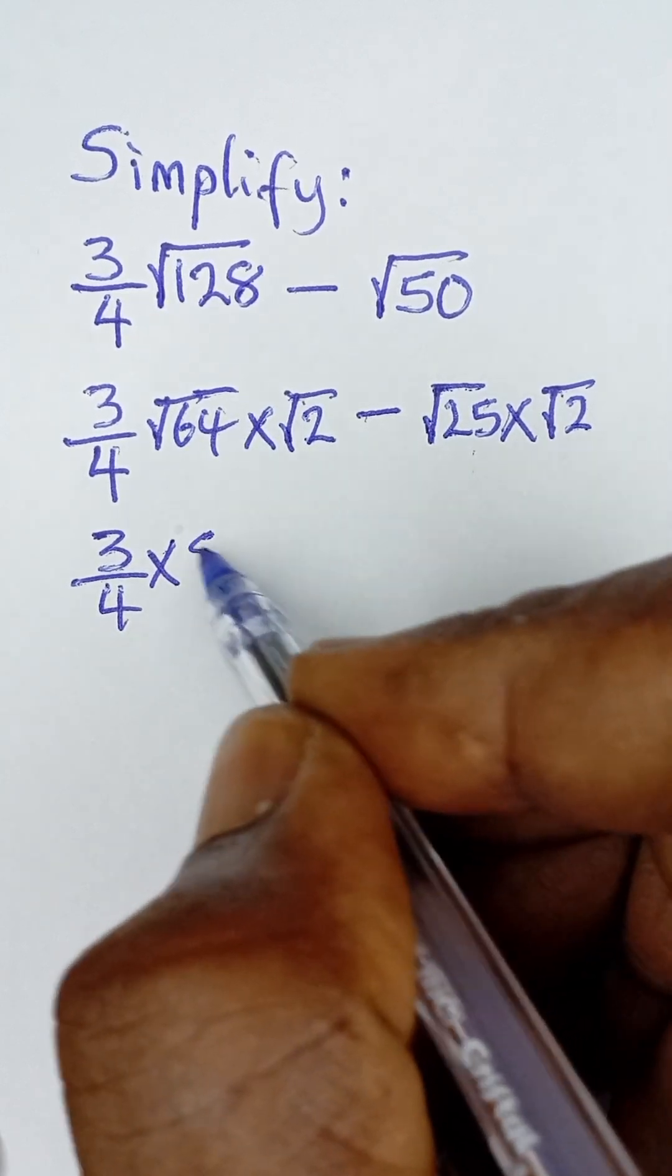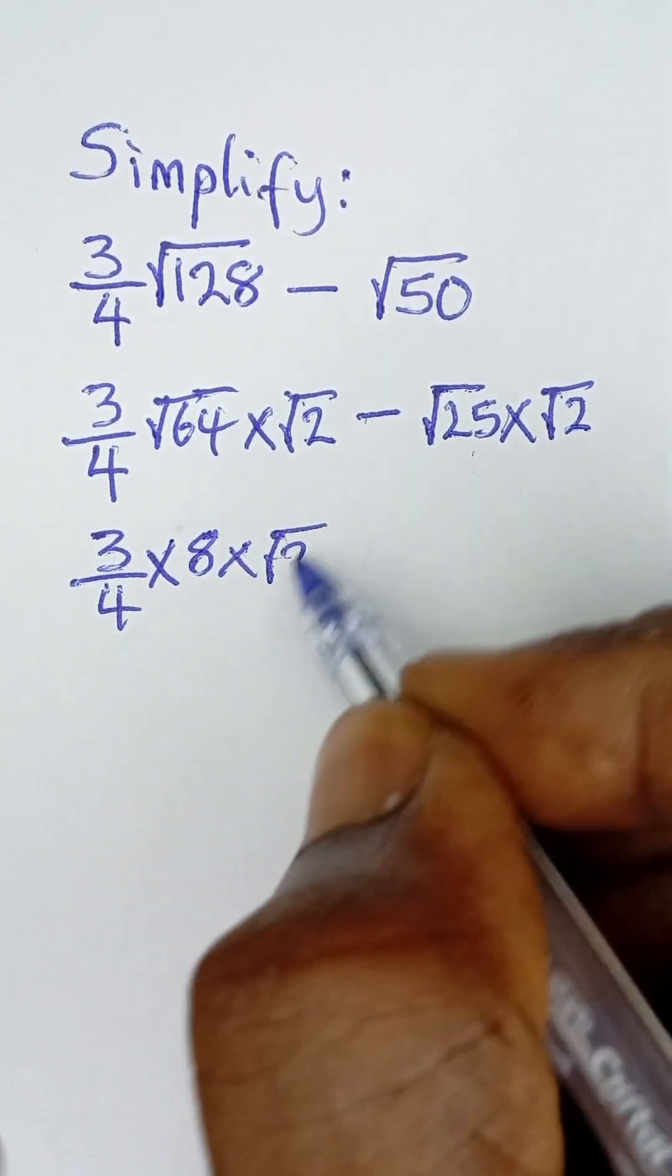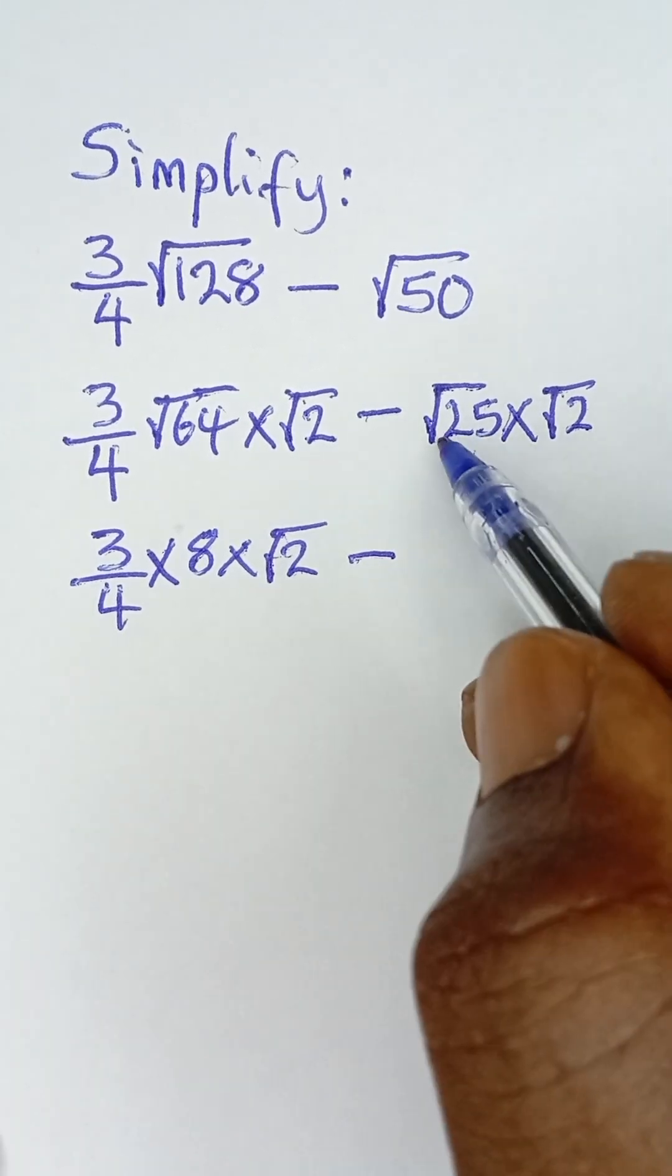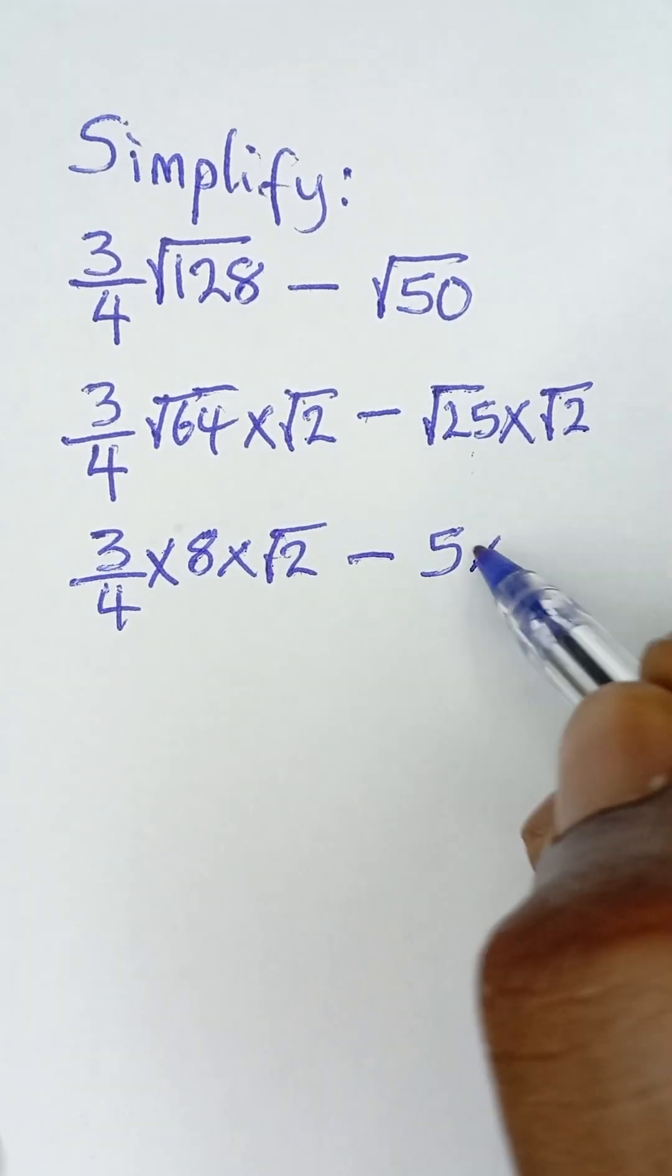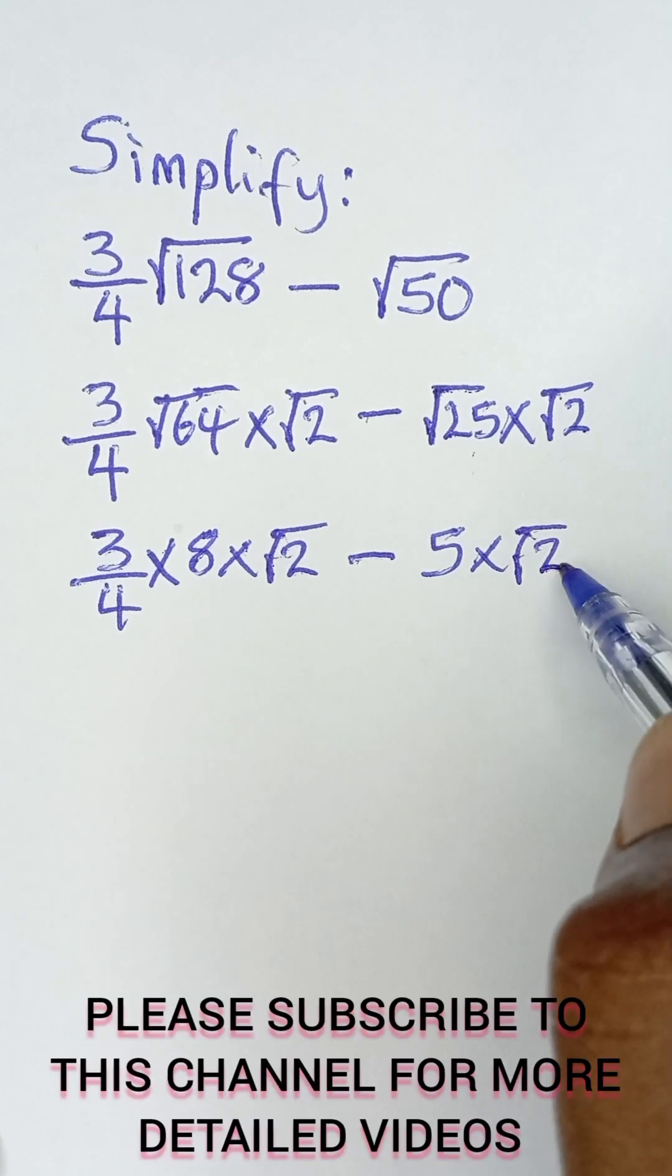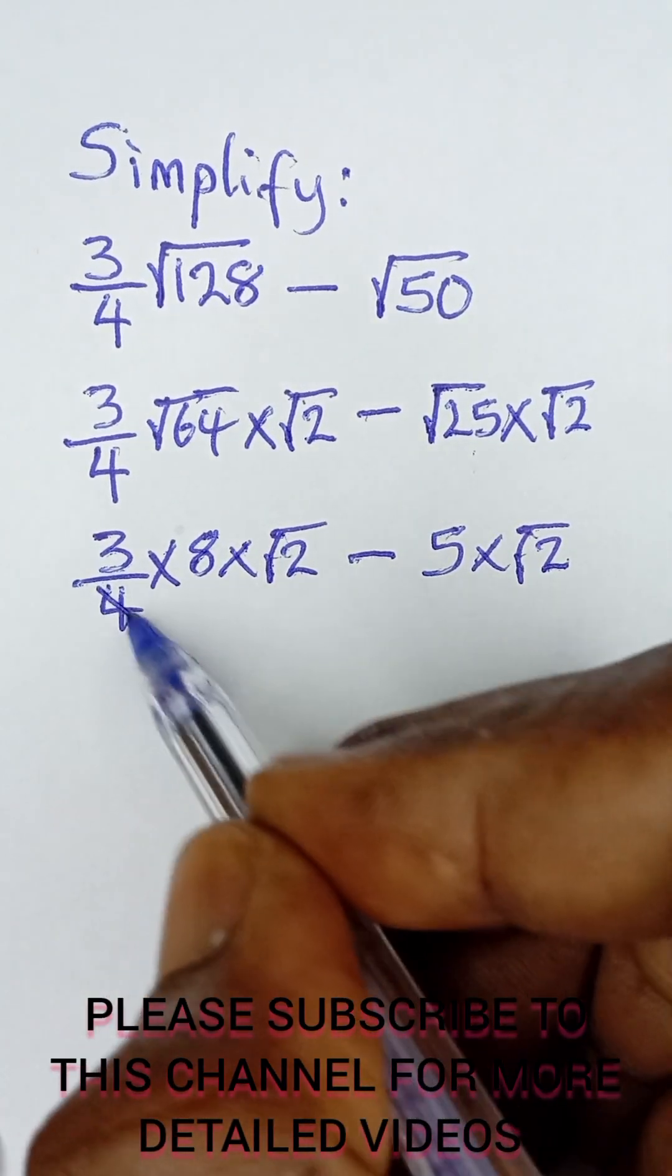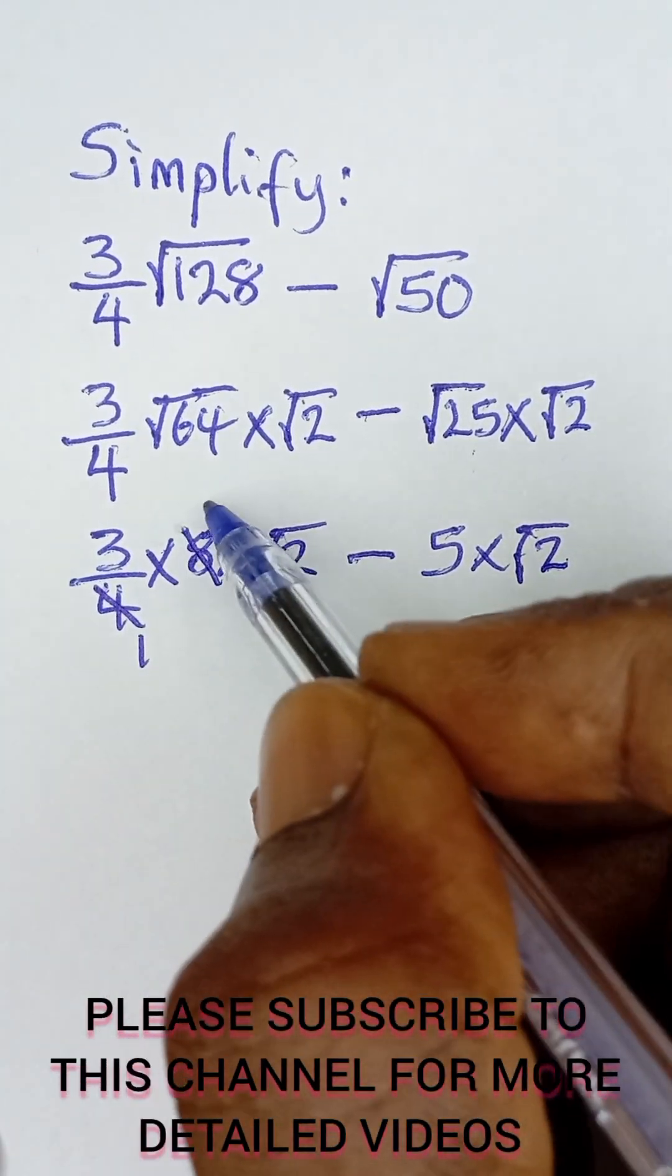The square root of 25 is 5, and then multiplied by root 2. Now this 4 here is 1, 4 in 8 is 2.